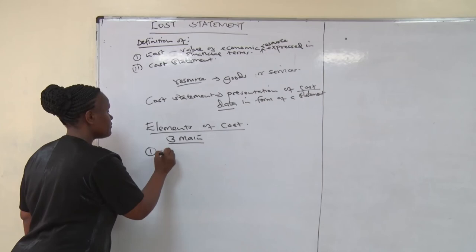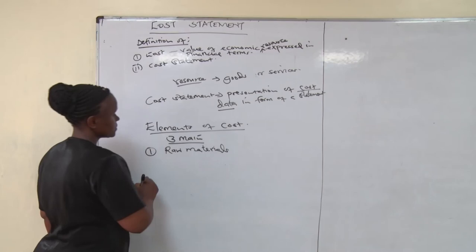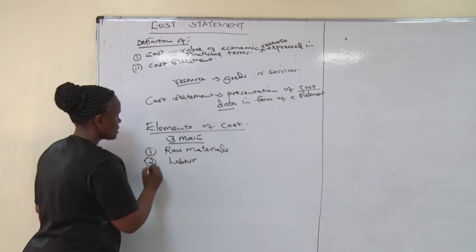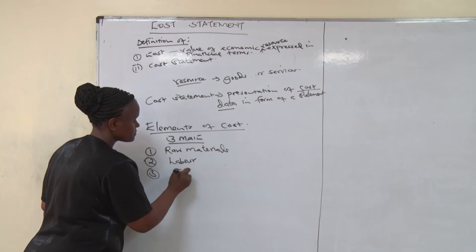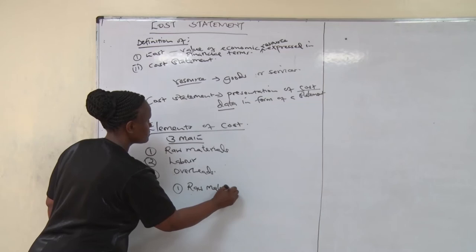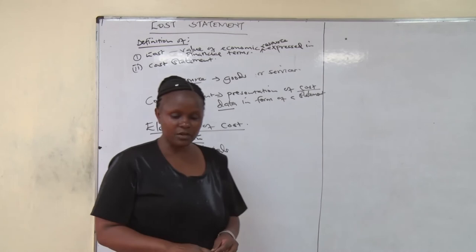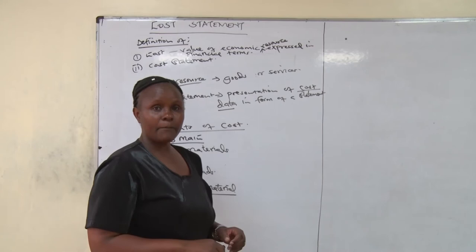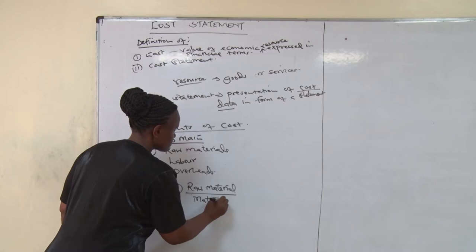Number one, we have raw materials. Number two, we have labor. Number three, we have overheads. Now, when we say raw materials, this is the main element of cost, whereby we get the material cost — the amount which you spend when you are buying the inputs which you are going to use to manufacture the output.